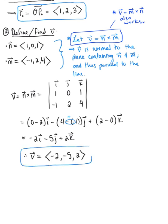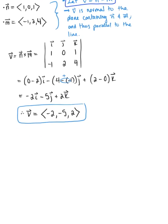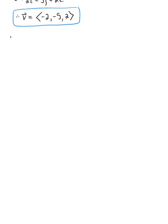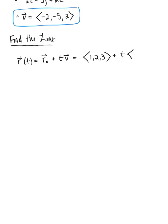We have everything that we need to find the line. So we have vector r of t is that position vector r naught plus t times vector v. So our position vector was the vector with the components (1, 2, 3) plus the parameter t multiplied by the parallel vector (-2, -5, 2). And we can simplify.